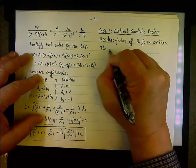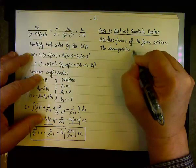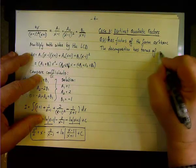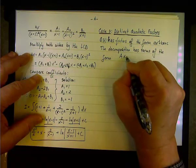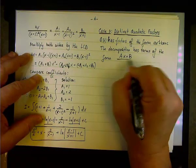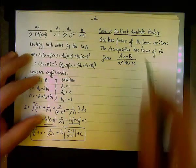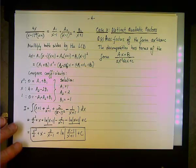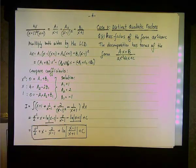The decomposition has terms of the form (Ax + B) over (ax² + bx + c). You need to see what I'm writing because I say 'a', but the A in the numerator is uppercase and the a in the denominator is lowercase. So if you just listen without seeing it, it can be pretty confusing.